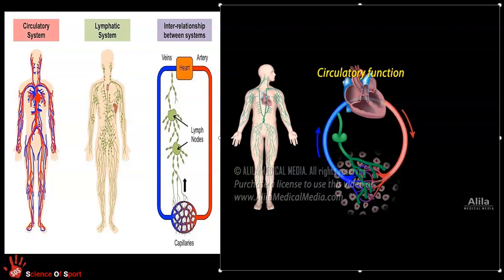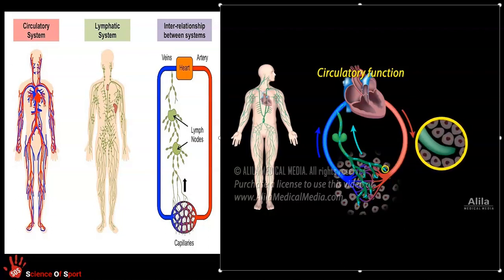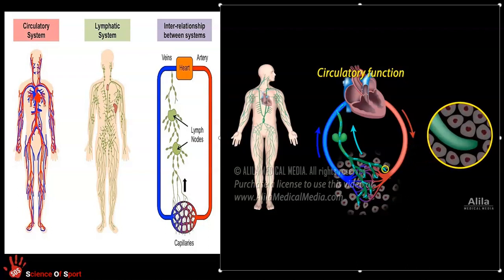Unlike the blood circulatory system, which is a closed loop, the lymphatic system is a one-direction, open-ended network of vessels. Lymphatic vessels begin as lymphatic capillaries made of overlapping endothelial cells. The overlapping flaps function as a one-way valve. When fluid accumulates in the tissue, interstitial pressure increases, pushing the flaps inward, opening the gaps between cells, allowing fluid to flow in.